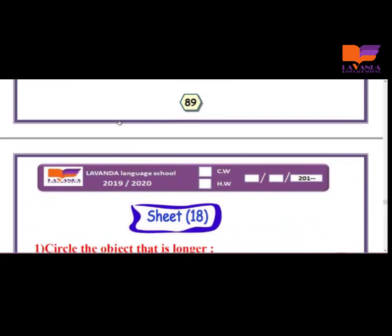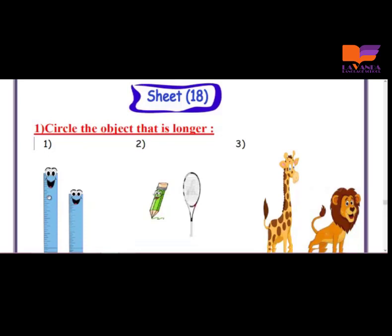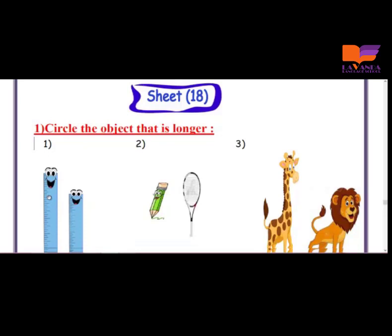When we solve an example, we have to read the question first. The question says: circle the object that is longer. Here I have two rulers. Obviously, this one is the longer one, so I will circle it.